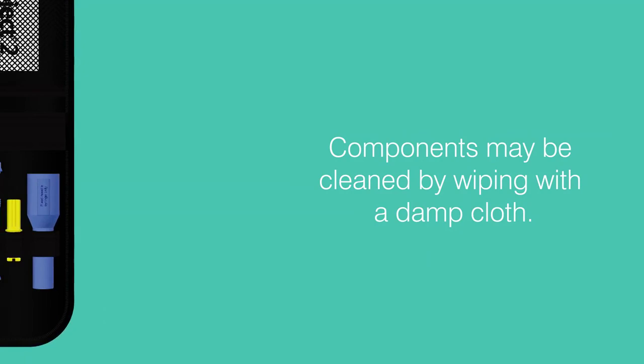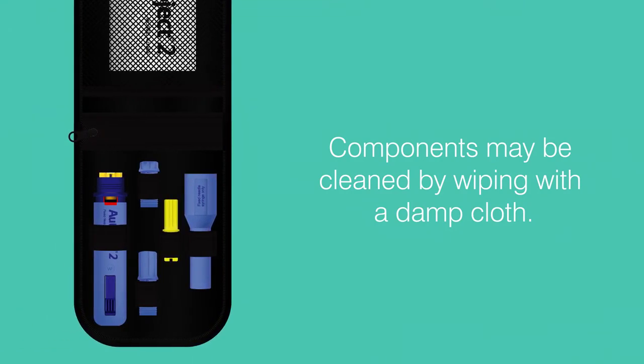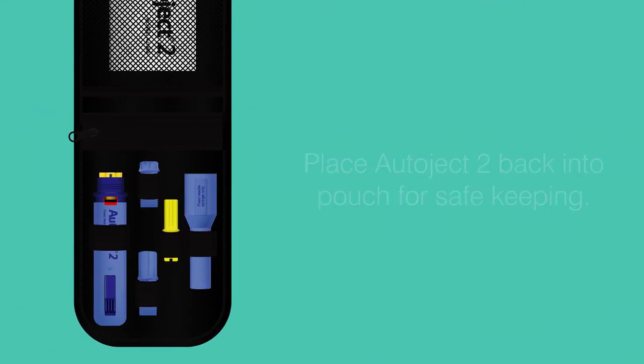The external components of the Autoject 2 may be cleaned by wiping with a damp cloth. Once finished using the device, place the Autoject 2 back in its pouch for safe keeping.